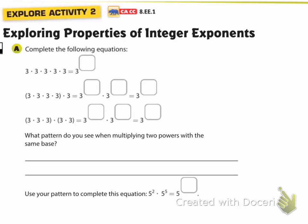Hopefully you have your paper filled in. In the first line we have three used as a factor five times, so that would be three to the fifth power. That's just the definition of the exponential expression. If three is the base and five is the exponent, then three to the fifth is the power.